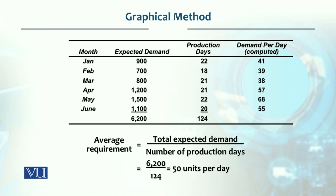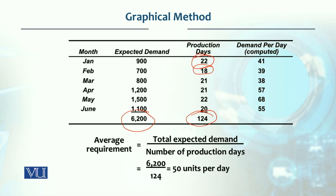Let's suppose this is the data for six months. We need to develop a plan: January's expected demand is 900 units, February is 700 units, March is 800, April is 1200, May is 1500, and June is 1100. The total demand is 6200 units.